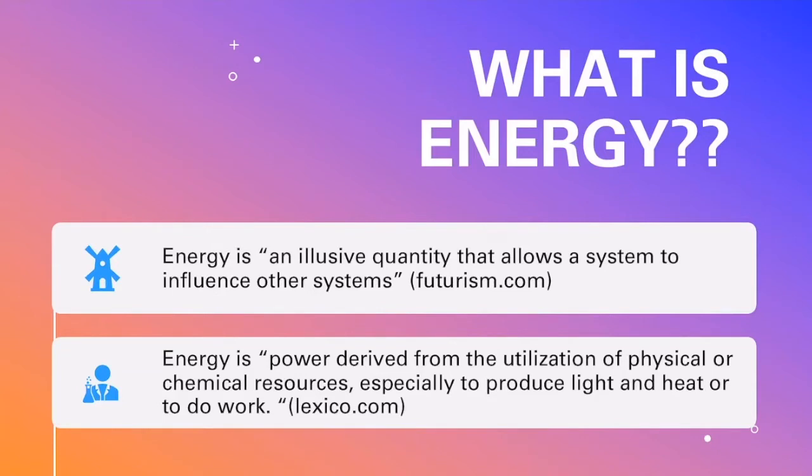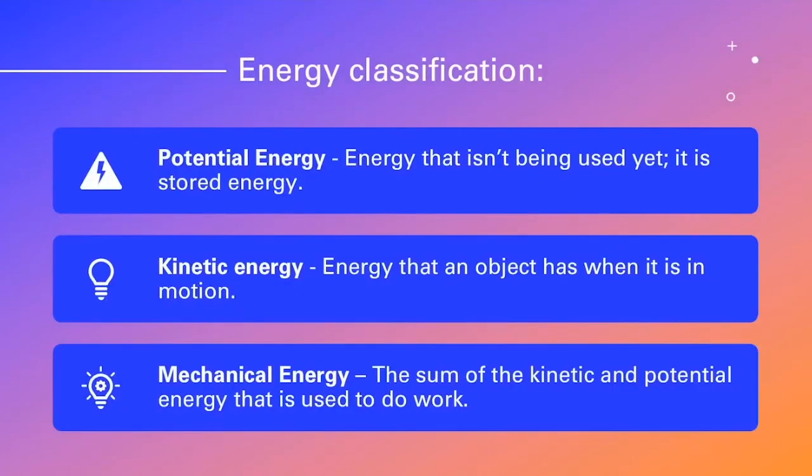So let's look at how we classify this elusive force. First we've got potential energy, which is energy that's not been used yet—stored energy. Then we've got kinetic energy, which is energy that an object has when it's in motion. And then mechanical energy, which is the sum of all of the kinetic and potential energy that an object possesses that it uses to do work.